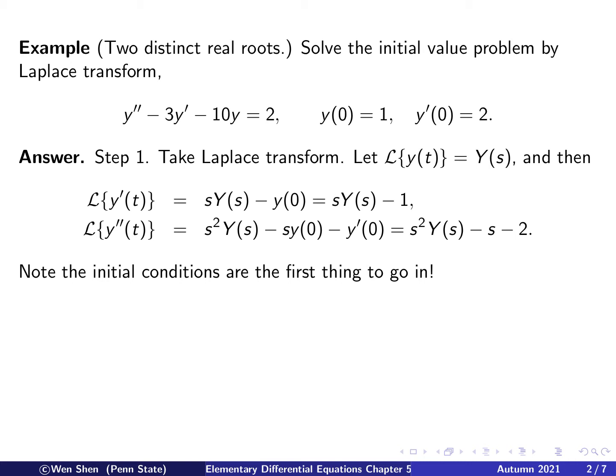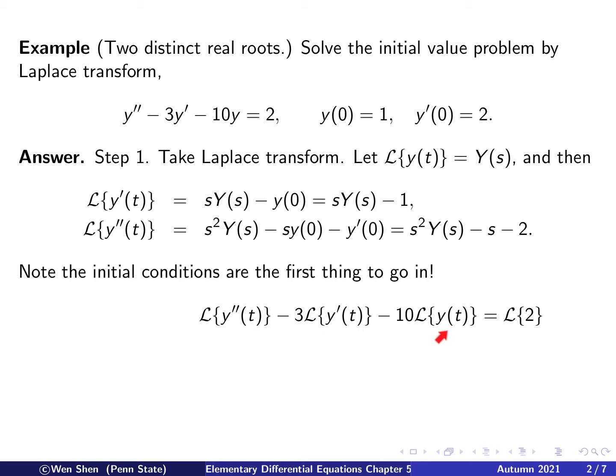In the other method, when we use the characteristic equation and find the roots and find the general solution with two arbitrary constants c1, c2, those are determined at the end by fitting in the initial conditions. But here, the initial conditions go in right away.